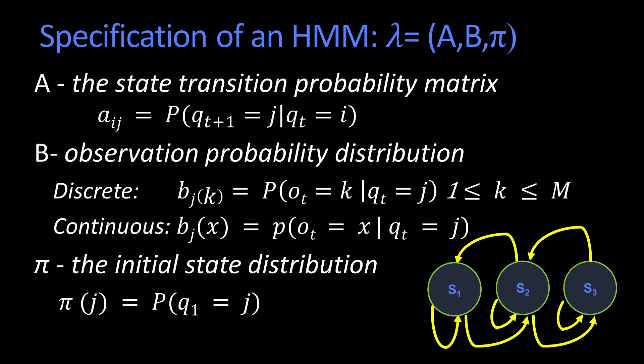And then the last thing you need is that initial distribution pi. That says, what's the probability of starting at a particular state?